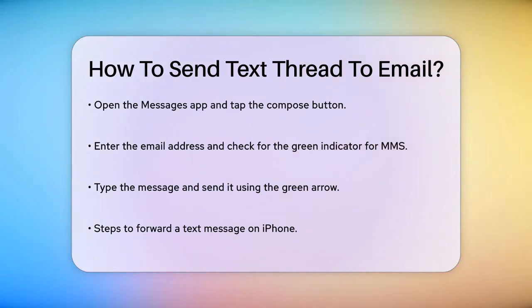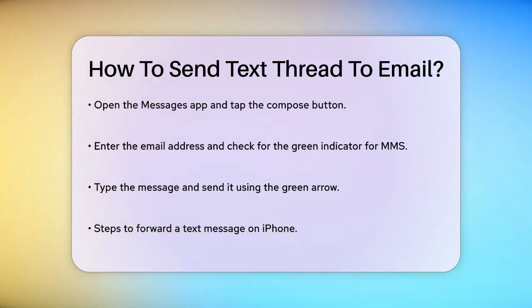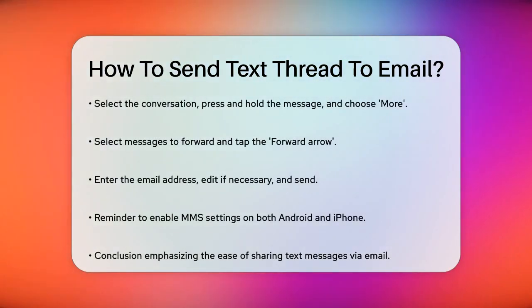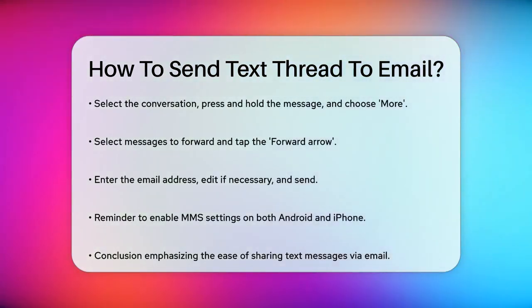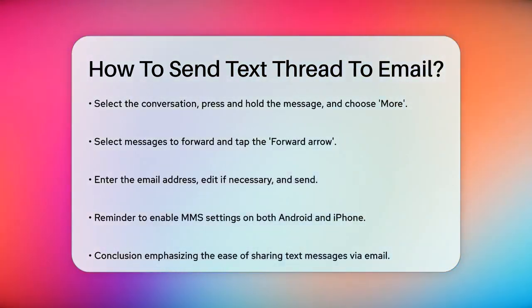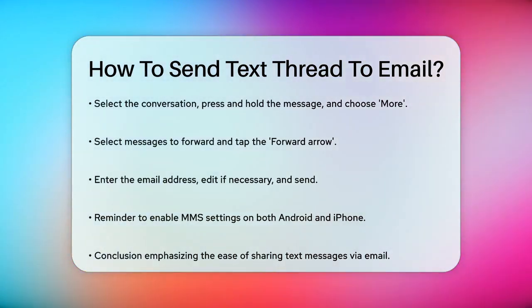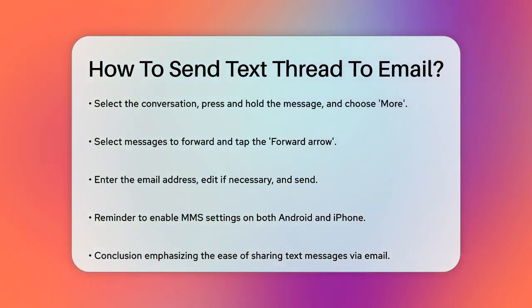To forward a text message to an email on your iPhone, open the Messages app and select the conversation with the message you want to forward. Press and hold on the message until a pop-up menu appears, then select More. Choose the messages you want to forward and tap the Forward arrow in the bottom right corner. Enter the email address in the To line, edit the text if needed, and send it using the green arrow.